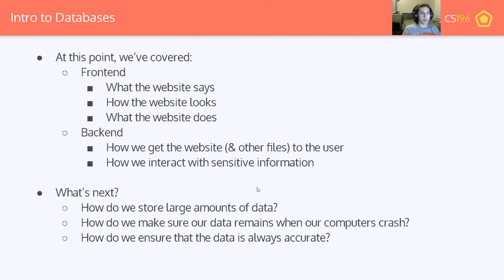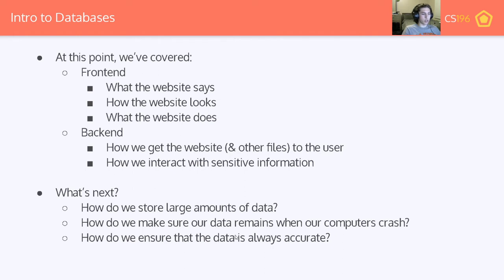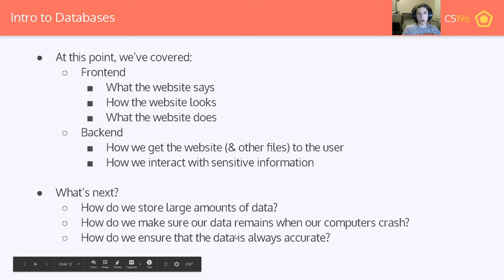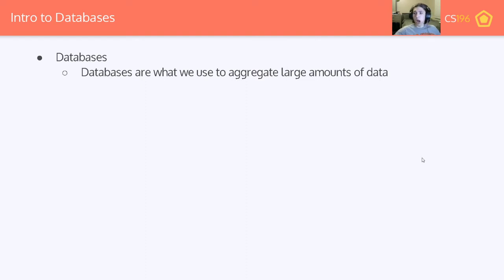How do we ensure that data is always accurate? This is especially important when you have multiple servers. If we think Google only has one server interacting with their database, that's not really feasible. They have probably tens or hundreds of thousands of servers serving people all around the world, all editing single sources of truth — their databases — and they need to make sure that's always accurate. If two things try to write to the same location, what's going to happen? We'll explore some of that later. Obviously the answer, hence the lecture title, is databases.